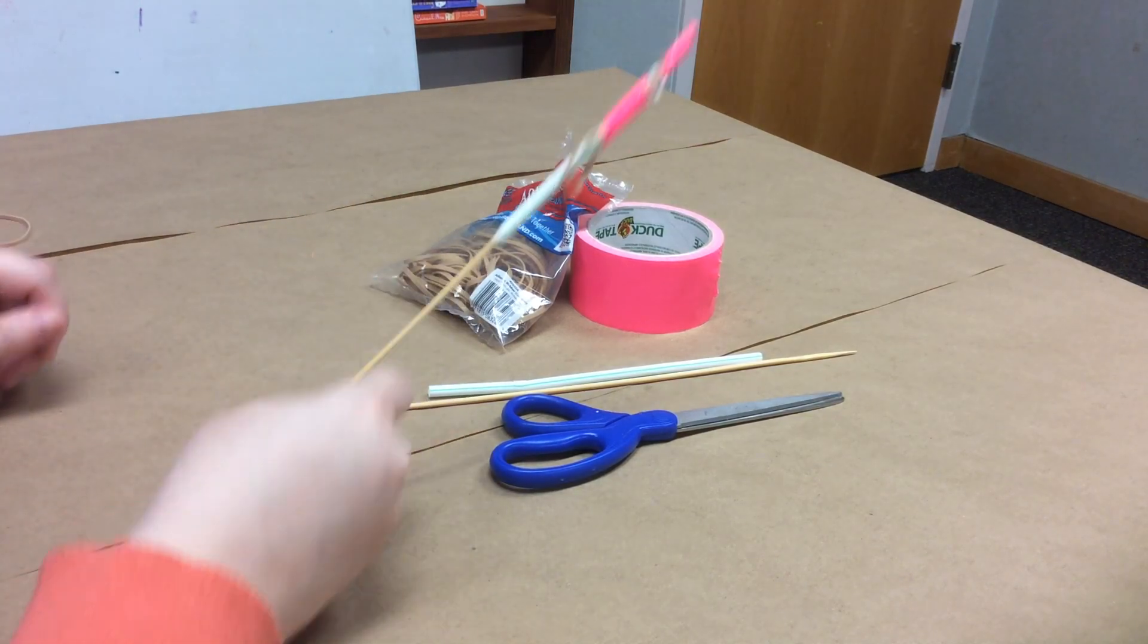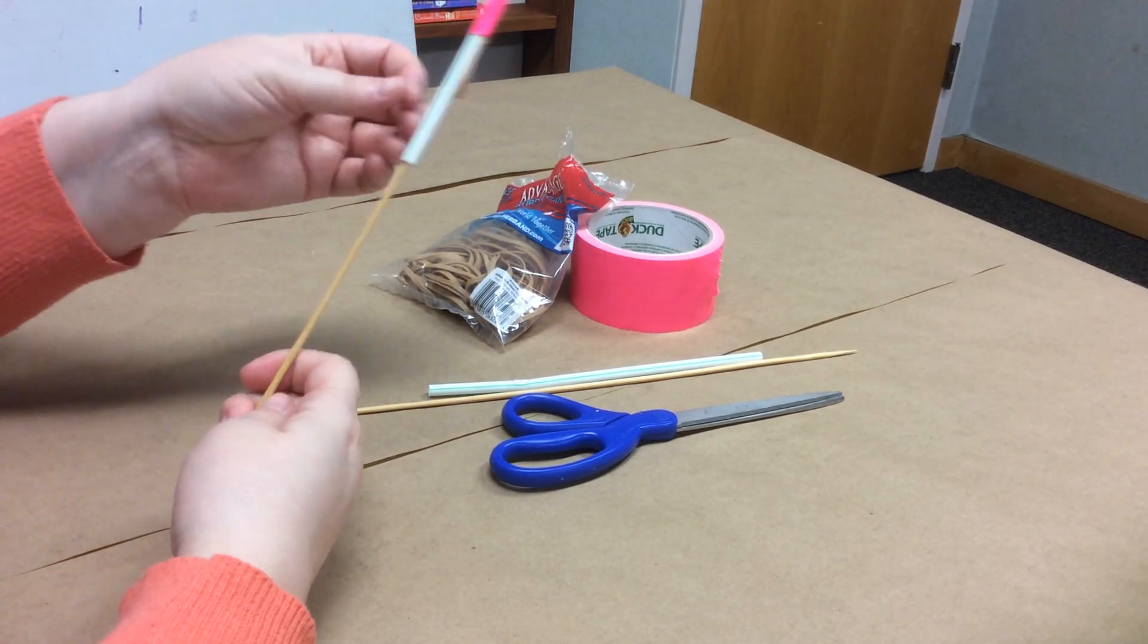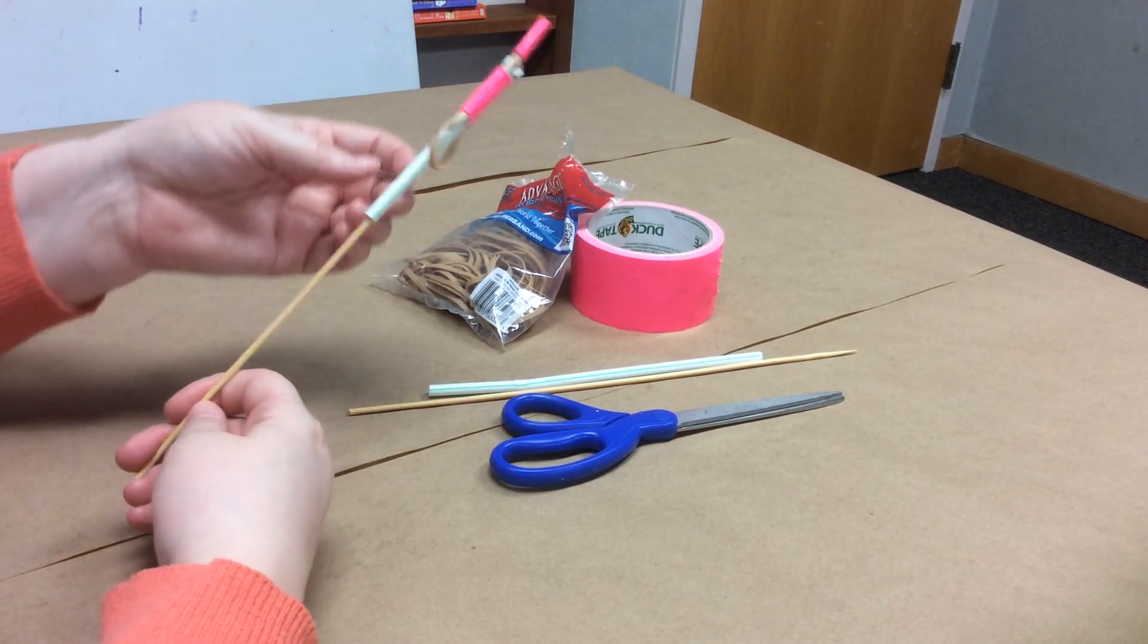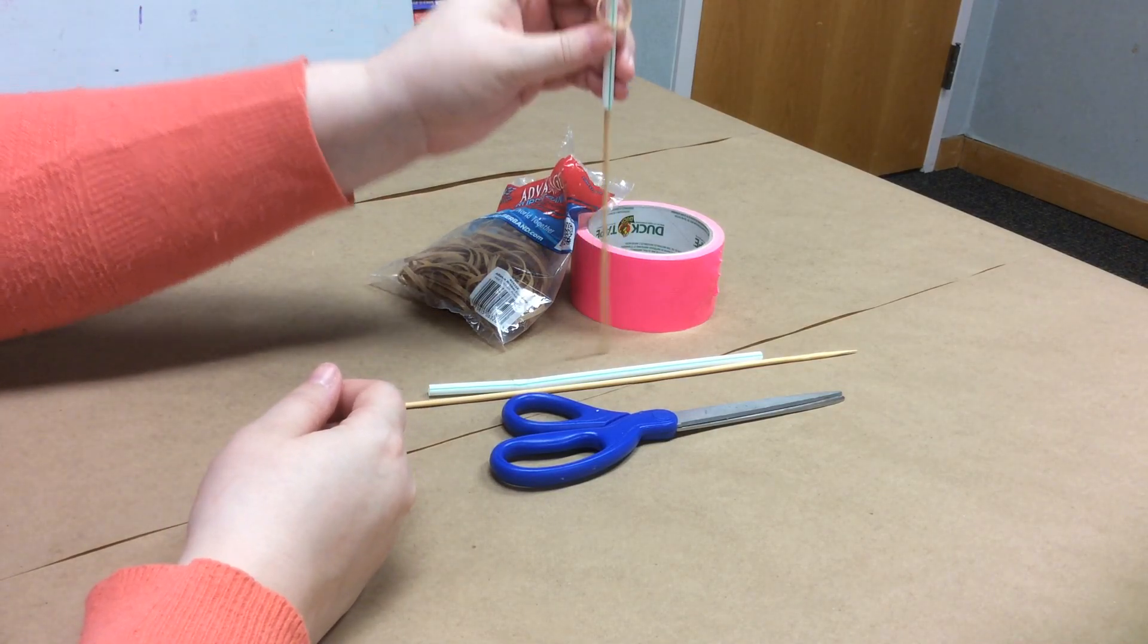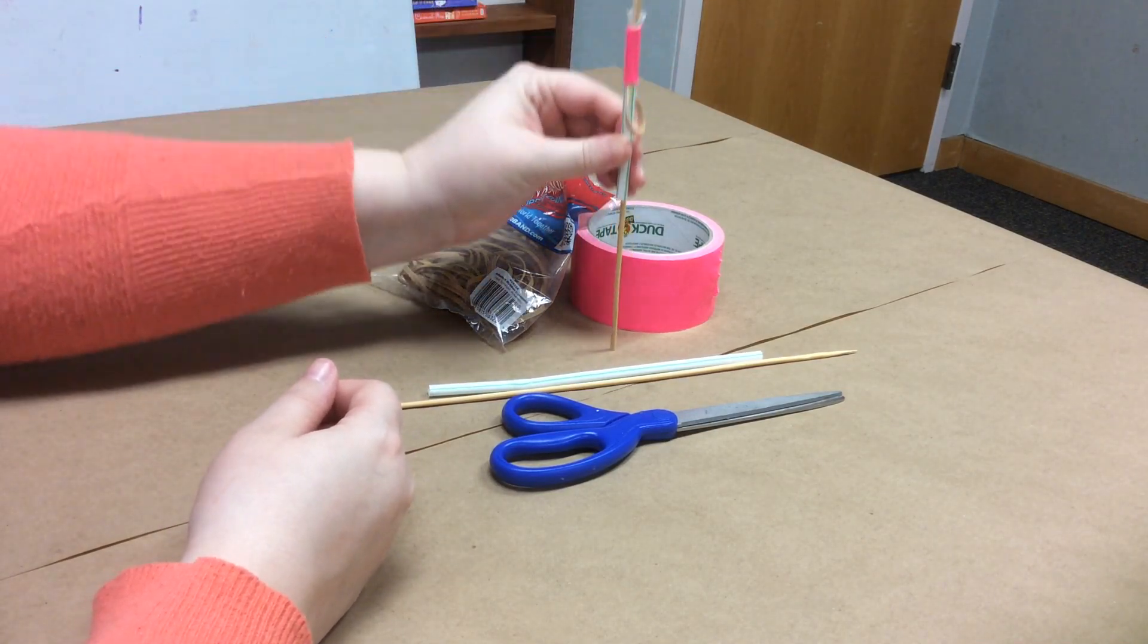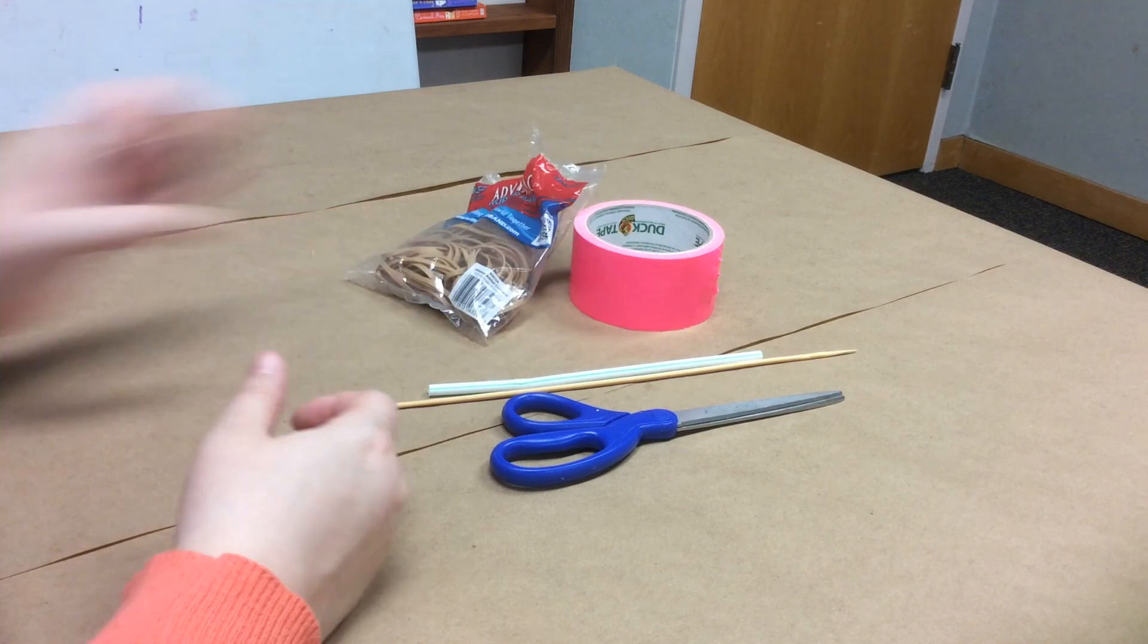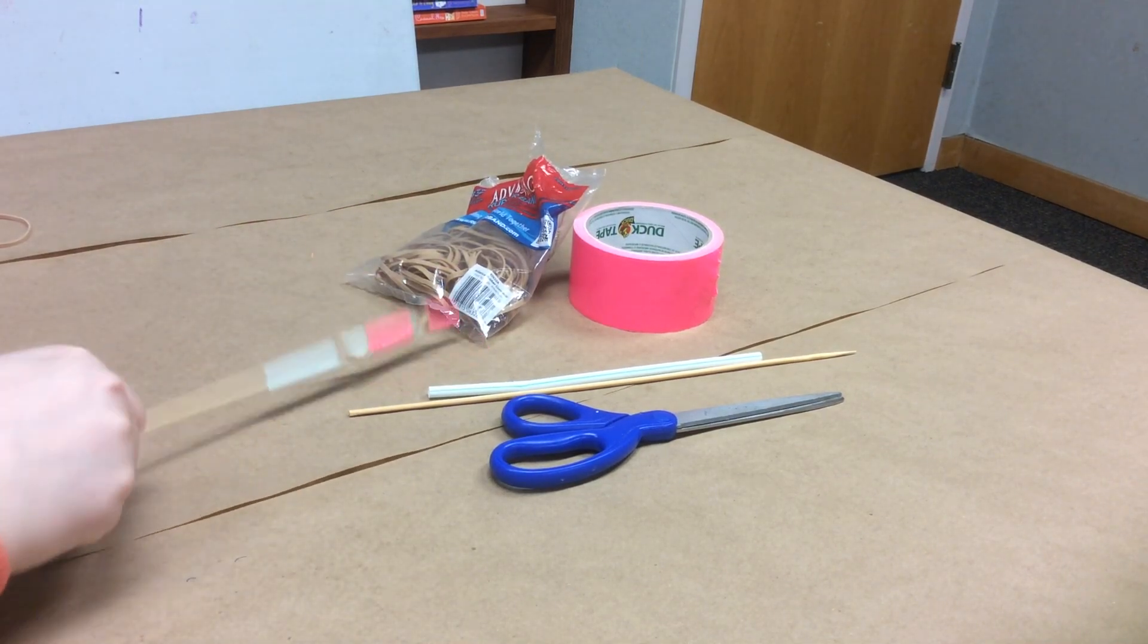It is an energy toy that looks like this and takes advantage of kinetic and potential energy and we're going to talk a little bit about that today. First I want to show you how my toy works. You're going to set it on the table, press it down, pull your straw down and let go and it springs up.